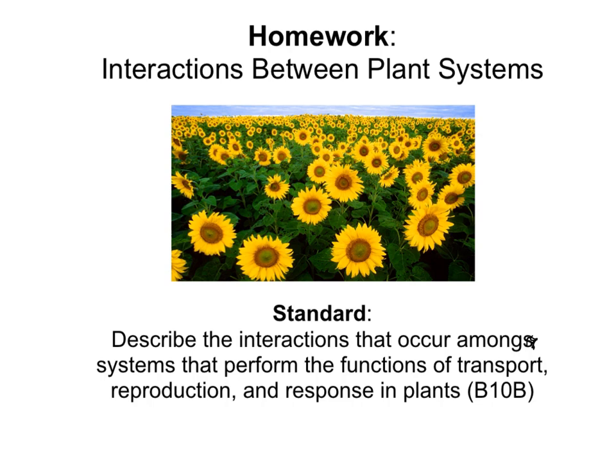The standard for today's homework is: describe the interactions that occur among systems that perform the functions of transport, reproduction, and response in plants. We're going to focus most importantly on how we describe the interactions that occur among these systems. It's not enough just to know what the systems are — we need to focus on how these systems interact with one another. Be sure to write down everything you see today. There's a lot of writing, but it's going to be very helpful for you on your writing assignment tomorrow in class.